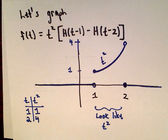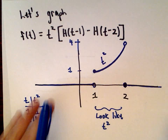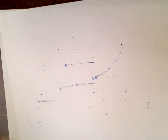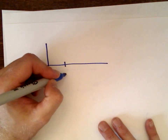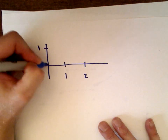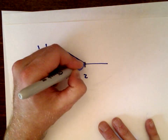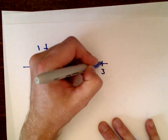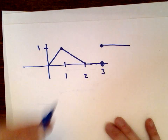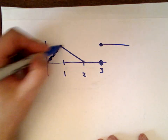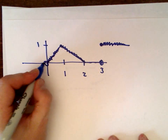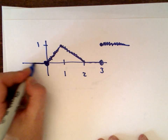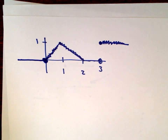In another example I'm going to take a piecewise graph and write it using Heaviside step functions. I'll come up with a formula for that graph using Heaviside functions in the next video.